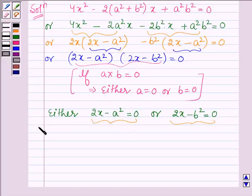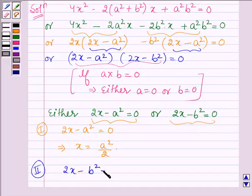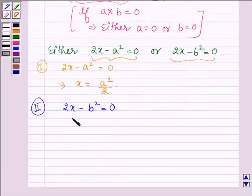Starting with the first equation, 2x - a² = 0, this implies that x = a²/2. The second equation is 2x - b² = 0, and on solving, we have x = b²/2.